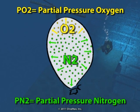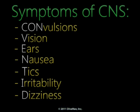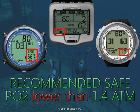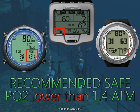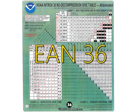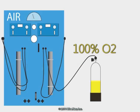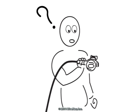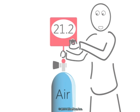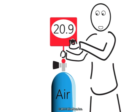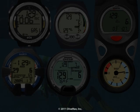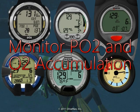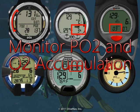Then we will discuss the physics and physiology aspects of nitrox diving. In module 5, we will go over the important limits of nitrox, and we will even use nitrox tables and calculate the oxygen exposure together. Then we will discuss how nitrox is produced, cover equipment requirements, and together analyze the content of a nitrox tank. Lastly, we will take you for a virtual nitrox dive using several dive computers.